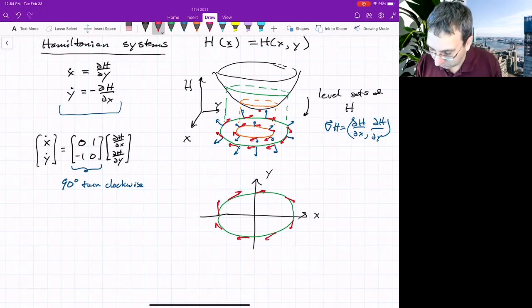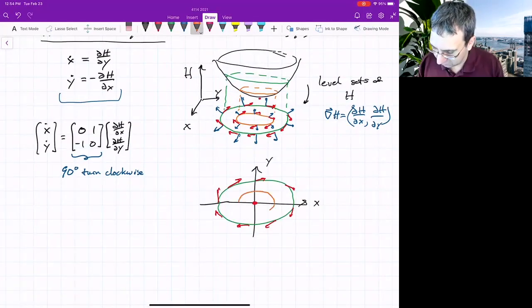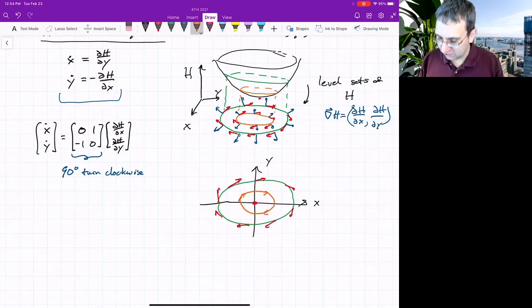except for these degenerate points, bottom of the height function. And I plotted a particularly simple height function. You could have other kinds of height functions that have all kinds of different dynamics. We could easily just draw the arrows on these curves because all level sets are trajectories.